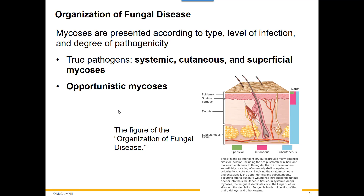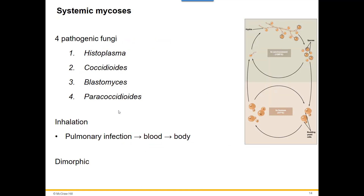There are four true pathogenic fungi we're going to talk about: Histoplasma, Coccidioides, Blastomyces, and Paracoccidioides. All of them are picked up through inhalation — they first cause a pulmonary infection but can then spread through the blood and cause infections elsewhere in the body, sometimes skin infections, sometimes other systemic infections. They are all dimorphic, meaning they can change how they grow based on whether they're in the environment or in the body.